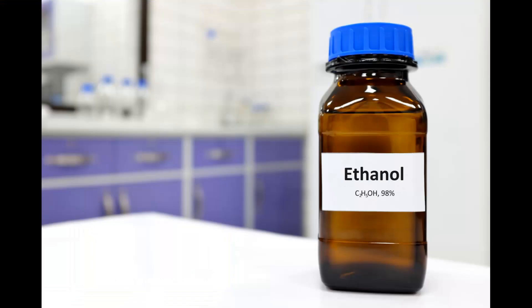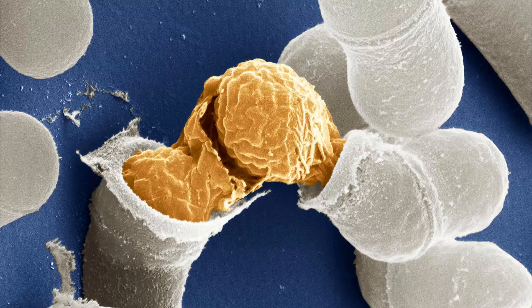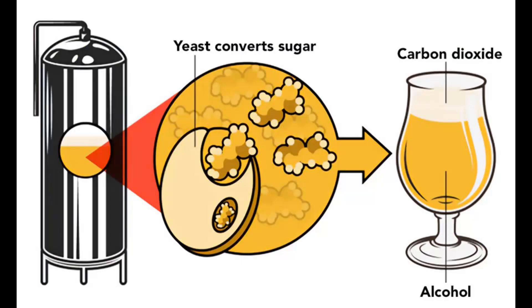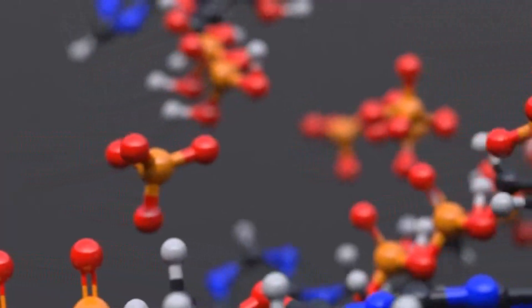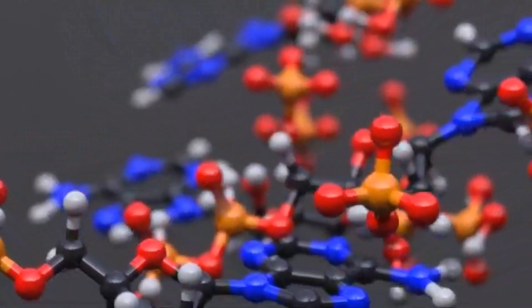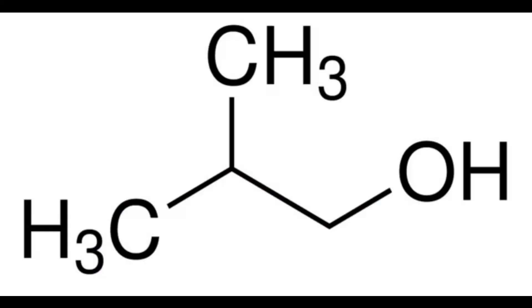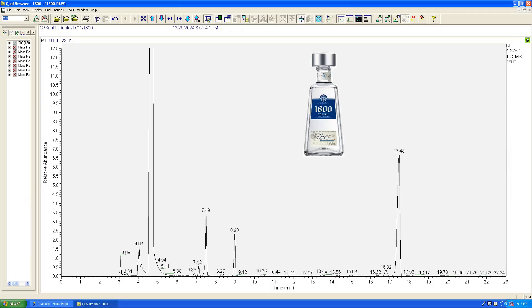As you know, ethanol is the molecule of interest when brewer's yeast digest and break down sugar, but there are many other chemicals metabolized during fermentation. One major byproduct is isobutyl alcohol, and we can see this large initial peak in the 1800 Tequila, both whiskey brands, Hennessy, Bacardi, and a faint trace in the Jägermeister.